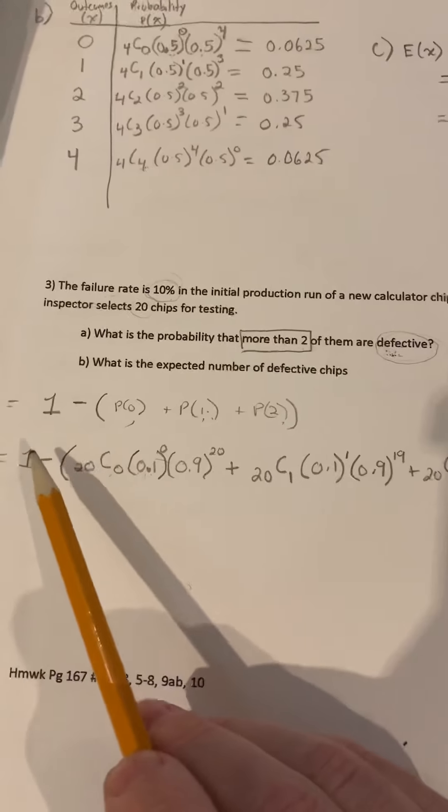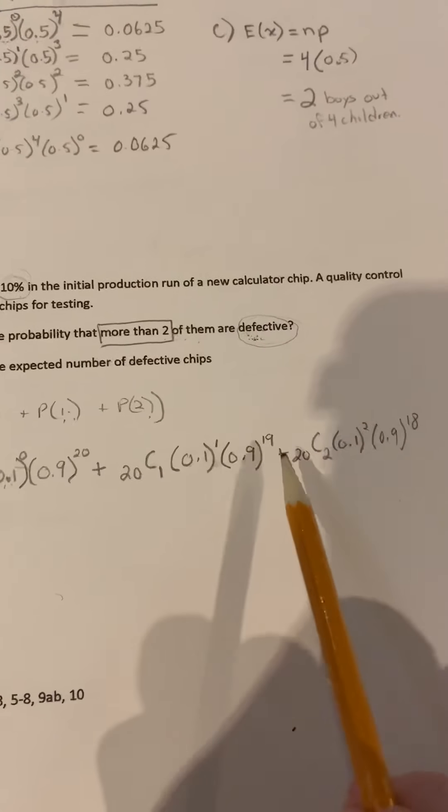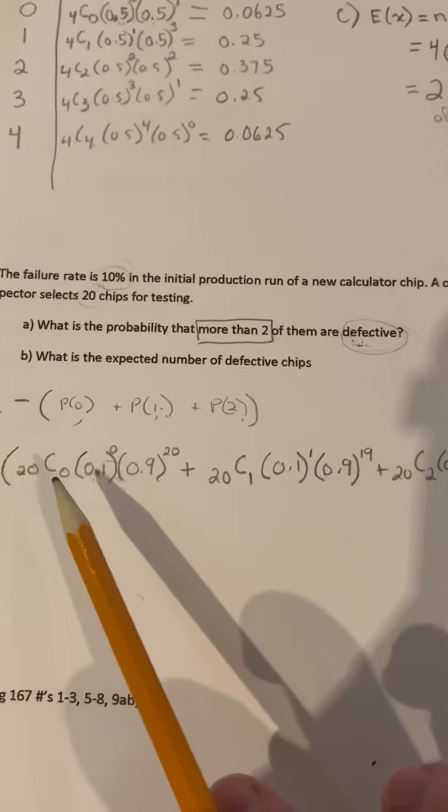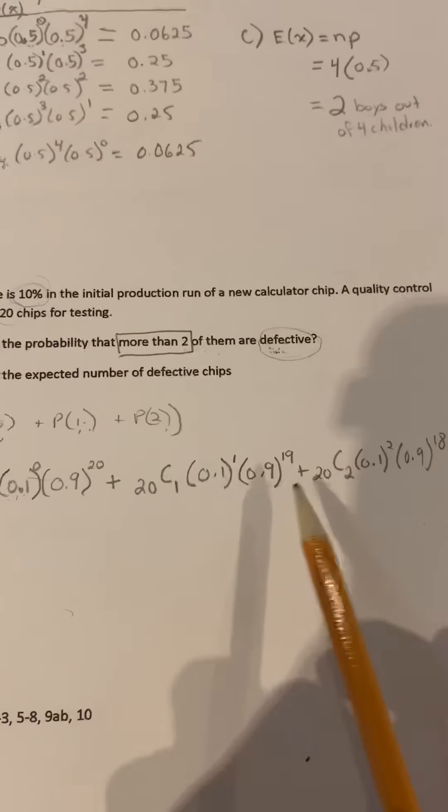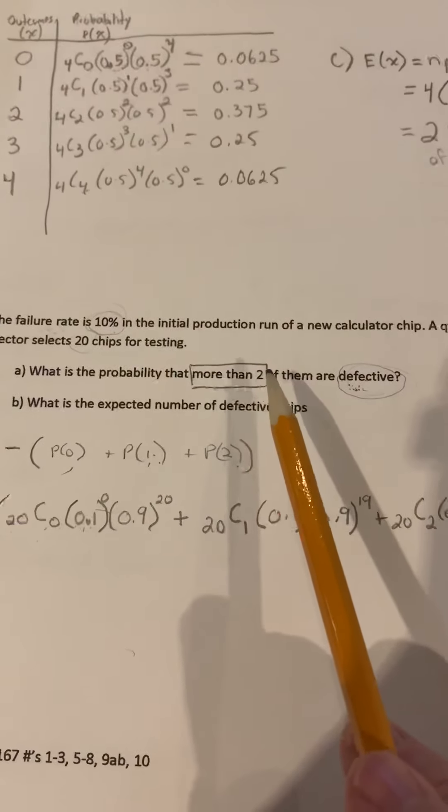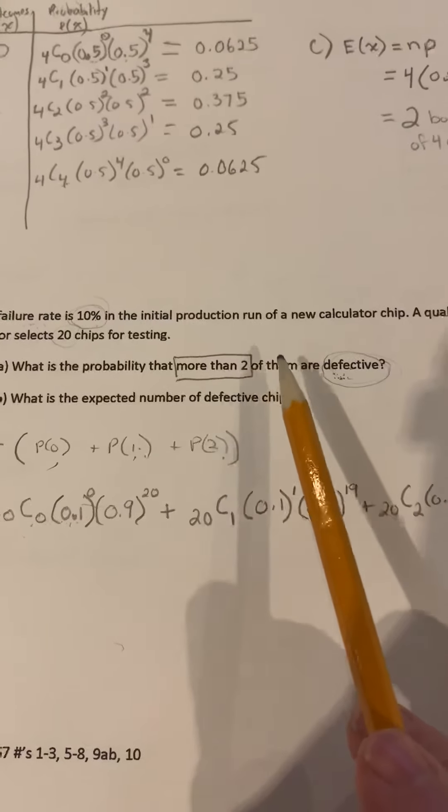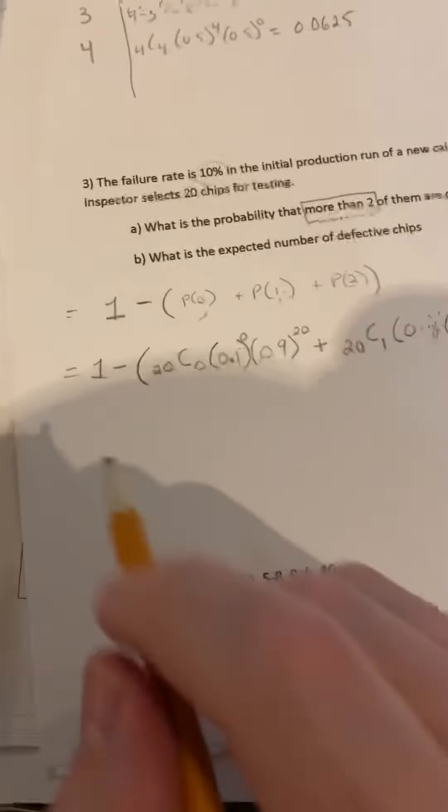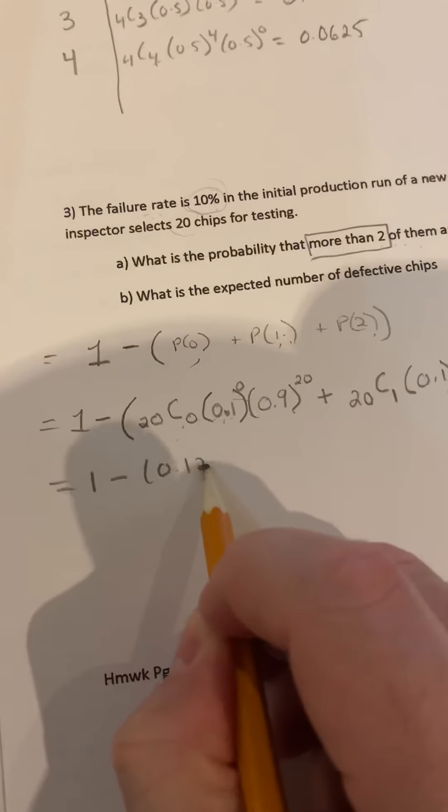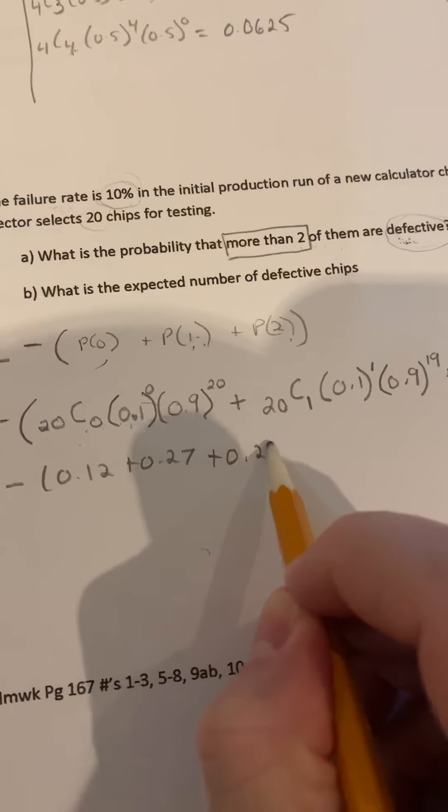So again, 1 or 100% subtract 0 defects, 1 defective chip, or 2 defective chips. So if we add these three together, take away from the total, which is 100%, that will give us the probability of having more than 2. So more than 2 would be 3, 4, 5, all the way up to 20. So when you plug that into your calculator, you get 1 minus 0.12 plus 0.27 plus 0.29.